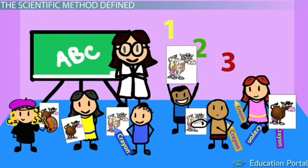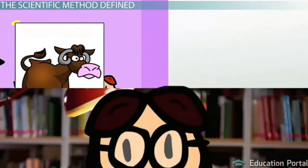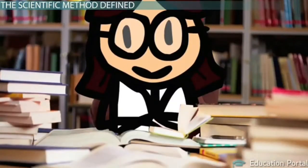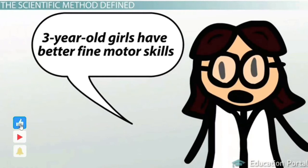A human growth and development researcher was observing children at a preschool. She noticed that the girls in the class tended to be better at coloring inside the lines. Since the researcher found this an interesting observation, she began to research any existing information that might be related to what she had seen. Based on her observation and research, she made a guess about what was occurring: three-year-old girls have better fine motor skills than three-year-old boys.